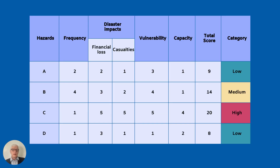Ultimately, this presentation will lead to a table which is considered the disaster map, which looks at the hazards you might encounter, their frequency, their impacts, vulnerabilities, capacity, and their score to provide a total score which looks at their priorities.